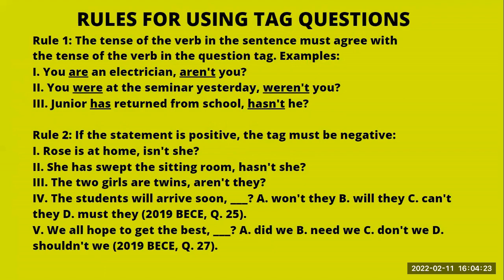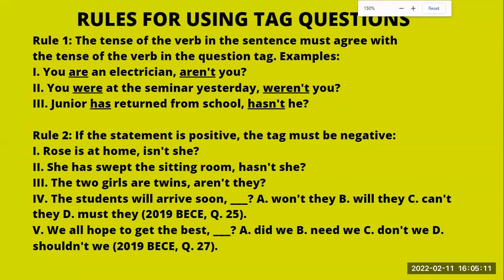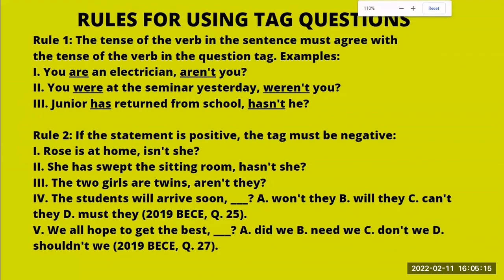Rule number one: the tense of the verb in the sentence must agree with the tense of the verb in the question tag. For example: 'You are an electrician, aren't you?' — the statement is in simple present, and 'aren't you' is also simple present. Second example: 'You were at the seminar yesterday, weren't you?' — it would be wrong to say 'aren't you,' as that would break the rule of sequence of tenses. Another example: 'Junior has returned from school, hasn't he?' — the same tense is maintained throughout.